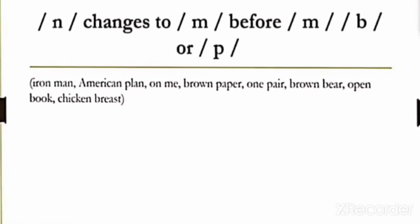Next rule is /n/. If /n/ sound comes before /m/, /b/ or /p/ sound, it would change into /m/ sound. Like iron man, American plan, on me, brown paper, one pair, brown bear, open book, chicken breast.